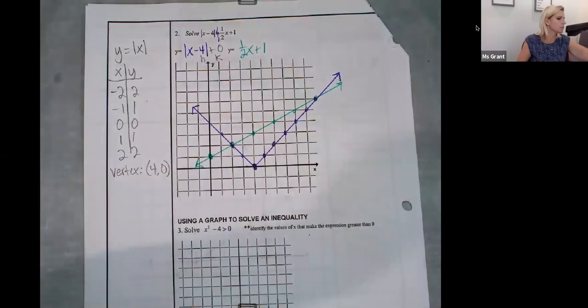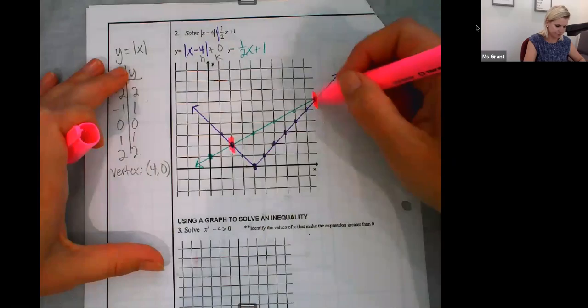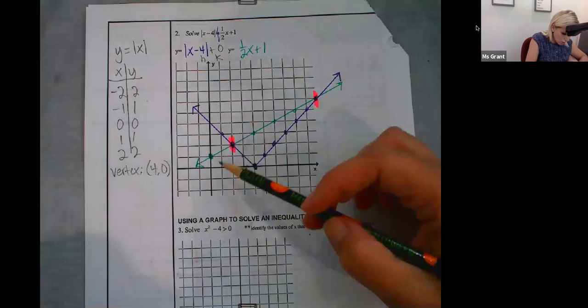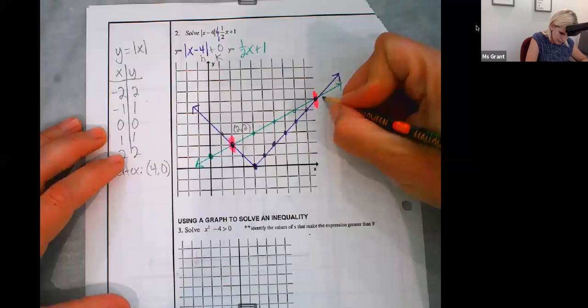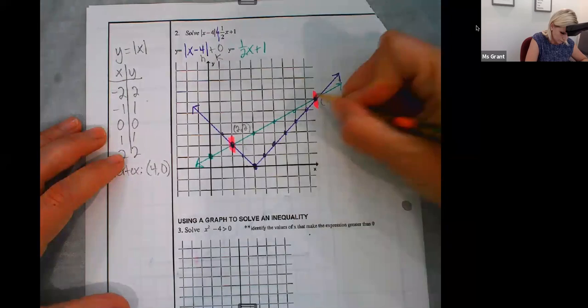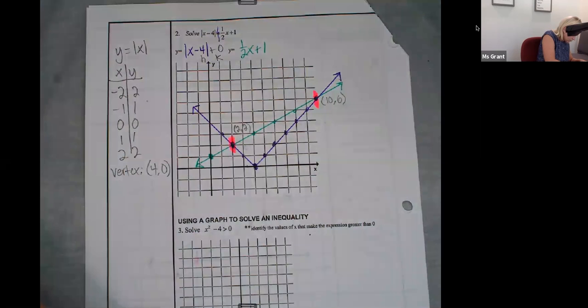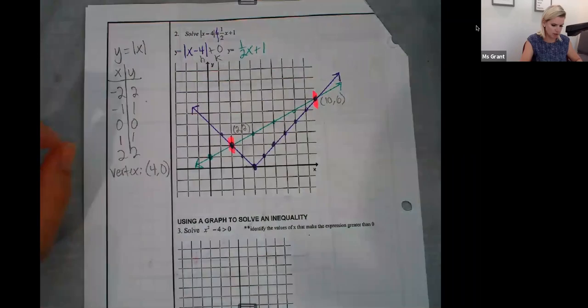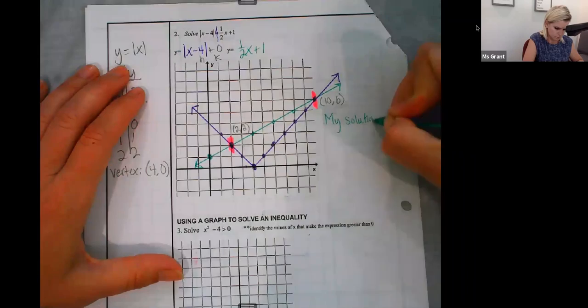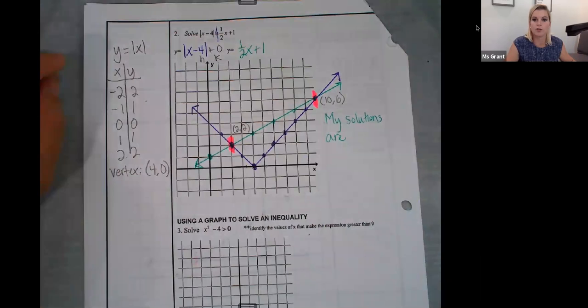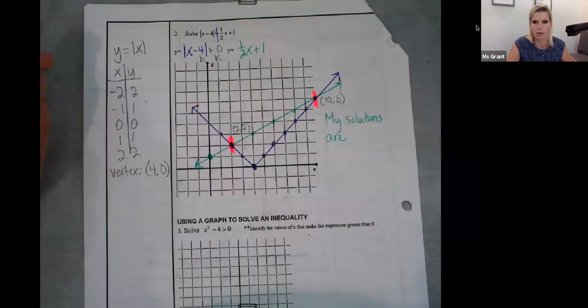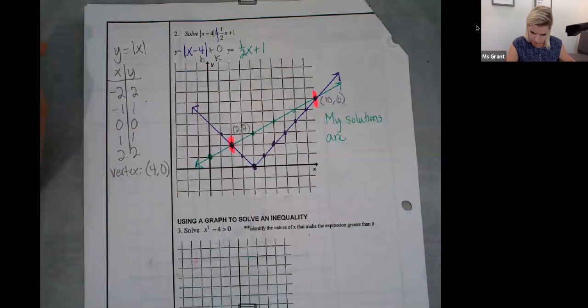Okay. I want to know where it hits. All I care about is my x-coordinate. This is 2 comma 2. This is 10 comma 6. So my solutions are, what? I have two solutions. All I care about is the x-coordinate of the ordered pair.